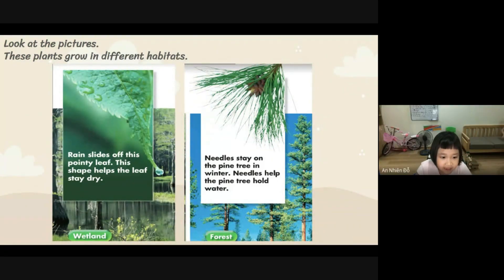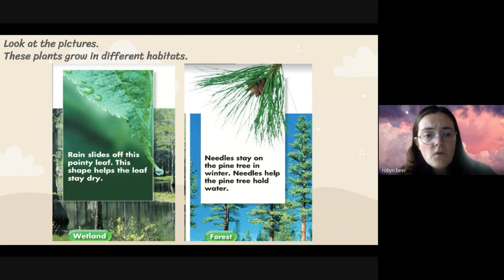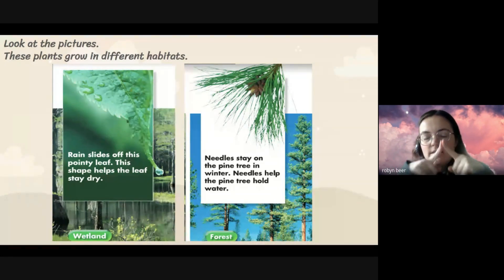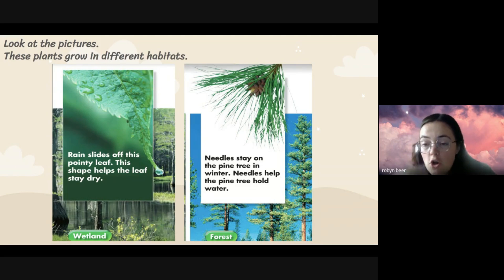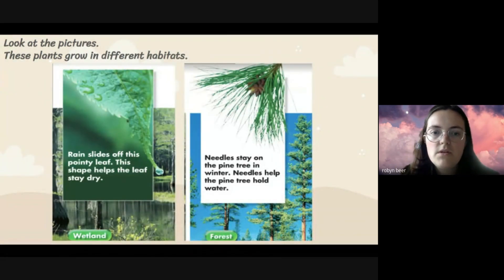Rain slides off the pointy leaf. This shape helps the leaves stay dry. Needles stay on the pine trees in winter. Needles help the pine trees hold water. Very nice Elsa, thank you. So in a wetland we have these leaves that are pointy like this, so that the water can go and run off the leaf so it can stay dry. And then in the forest we have pine trees with these long thin green things called needles, and these can hold water for the tree. So the one wants to get rid of water and the one wants to keep the water.